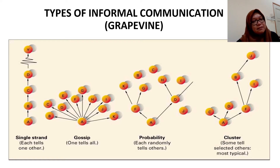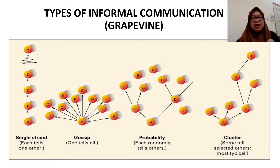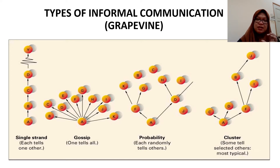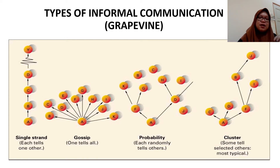In probability, it starts with A, who randomly tells F and D but not J. When F hears it from A, F passes it to random people, and so on. The last type is cluster, where a person tells selected others. In cluster, information moves from one group to another — A tells his cluster C, D, and F, and F tells his cluster B and R, and so on.